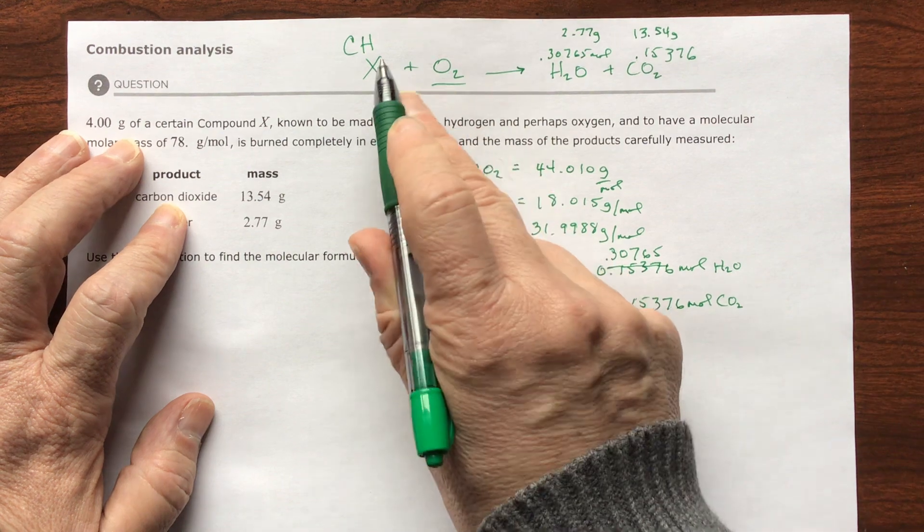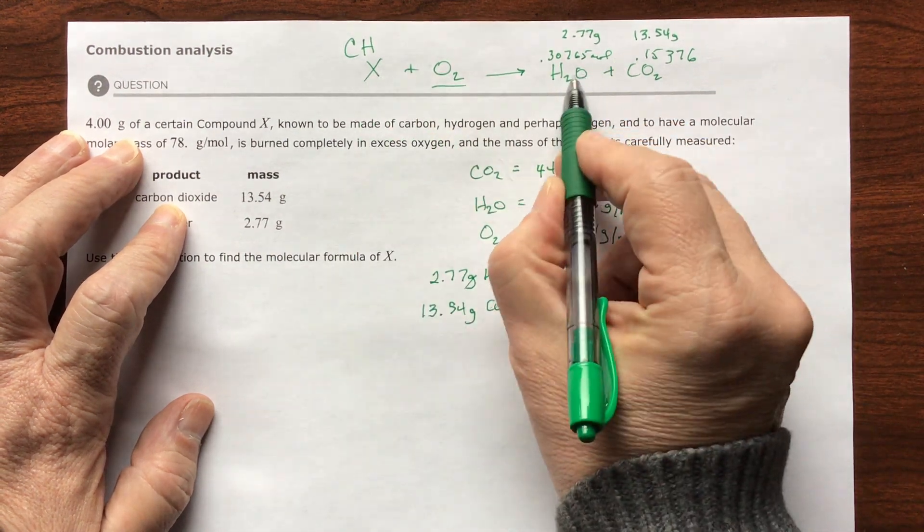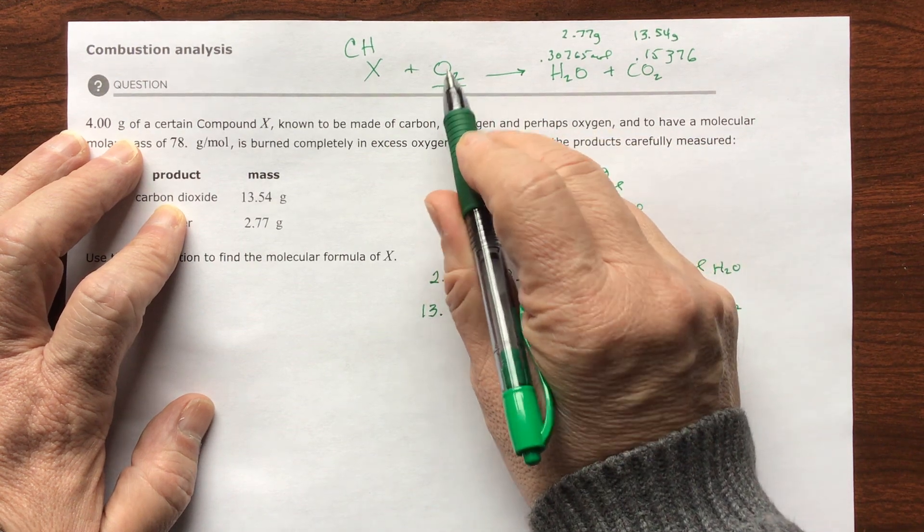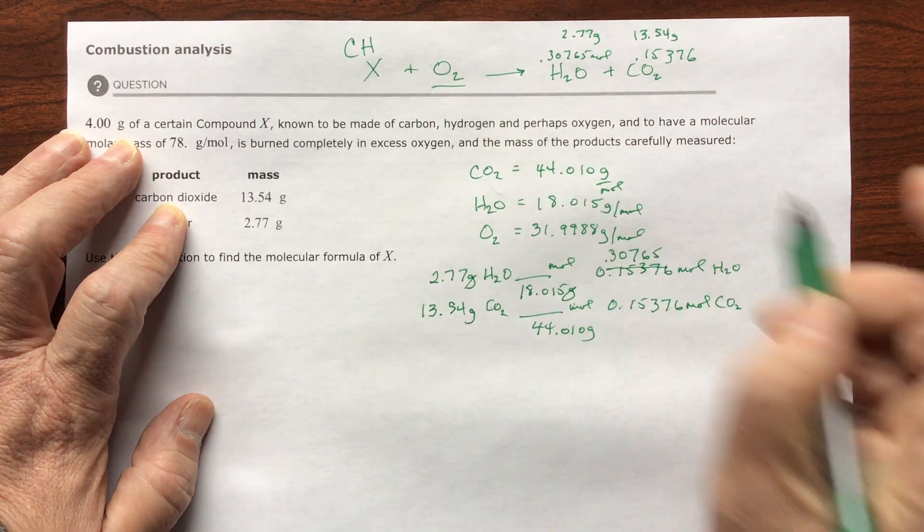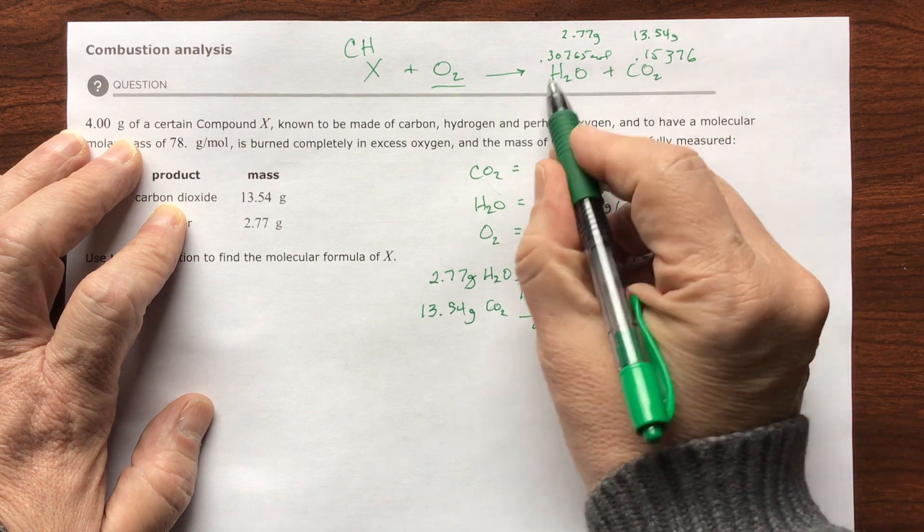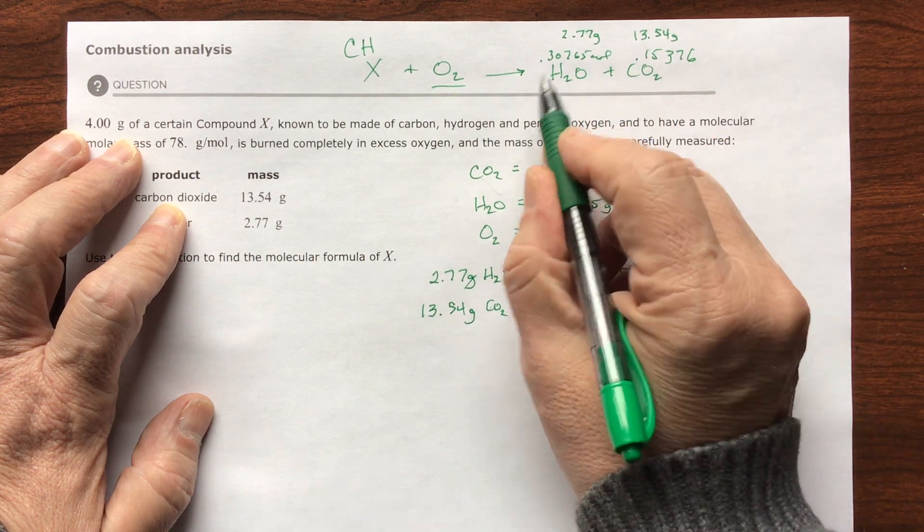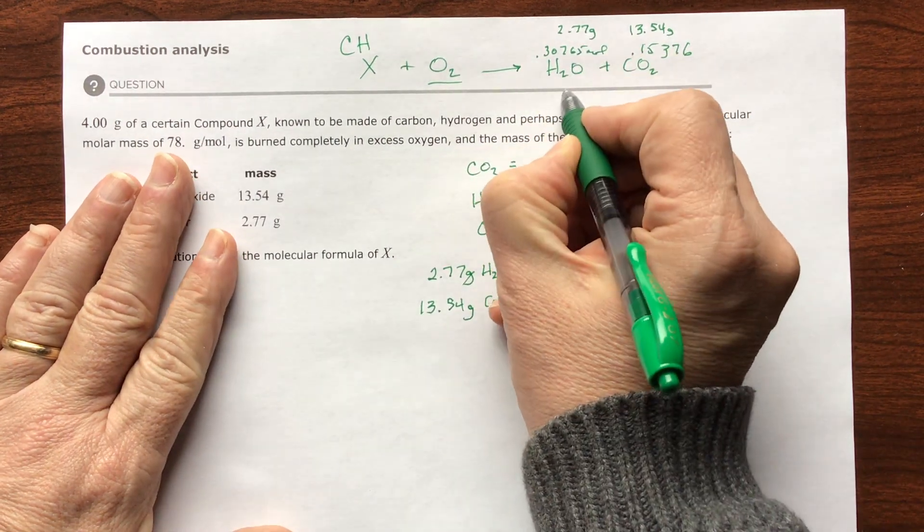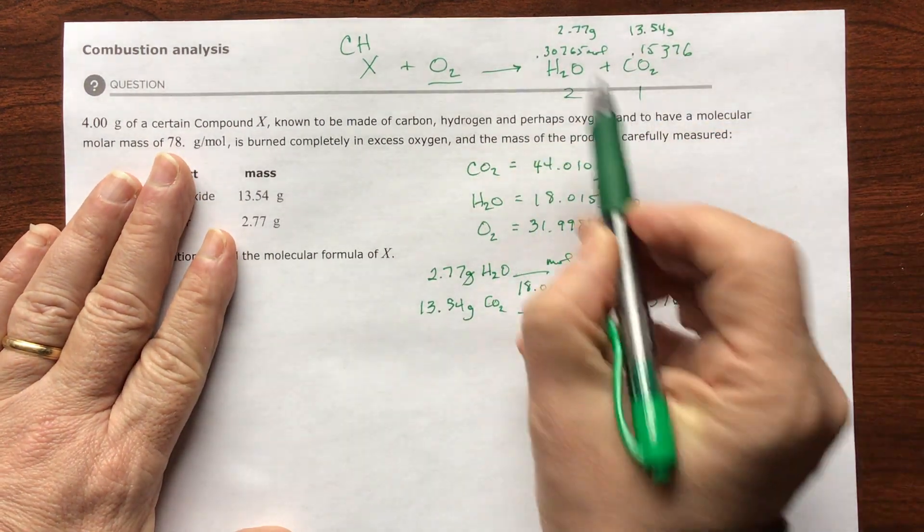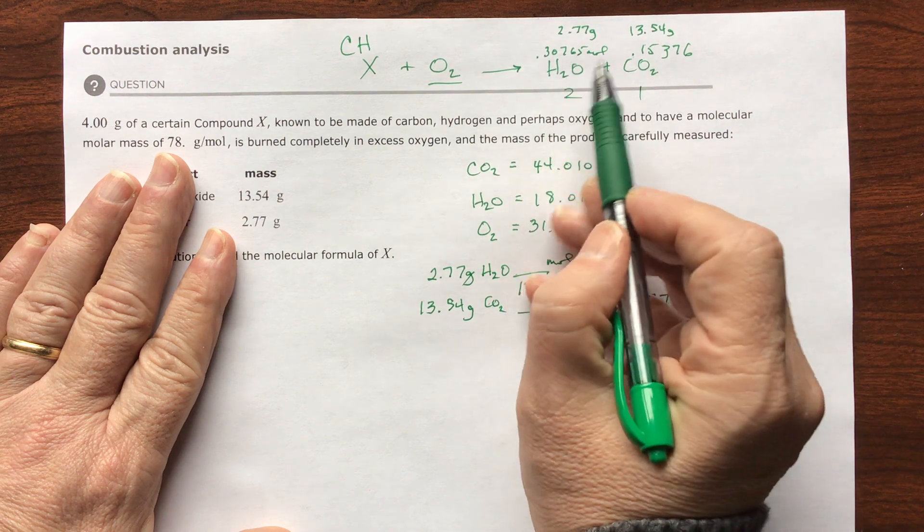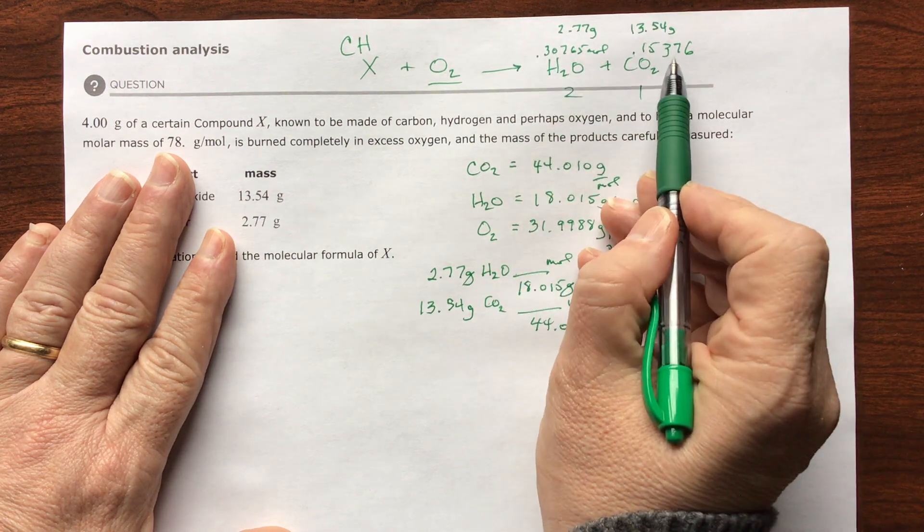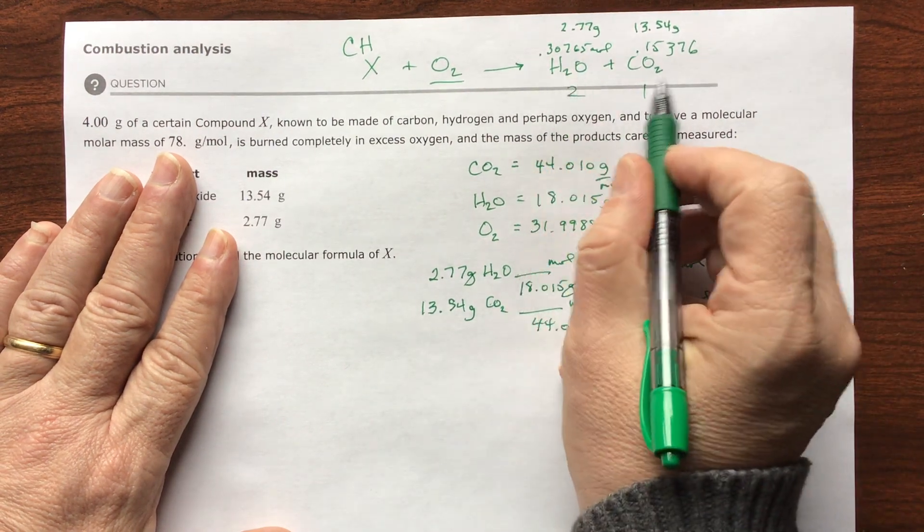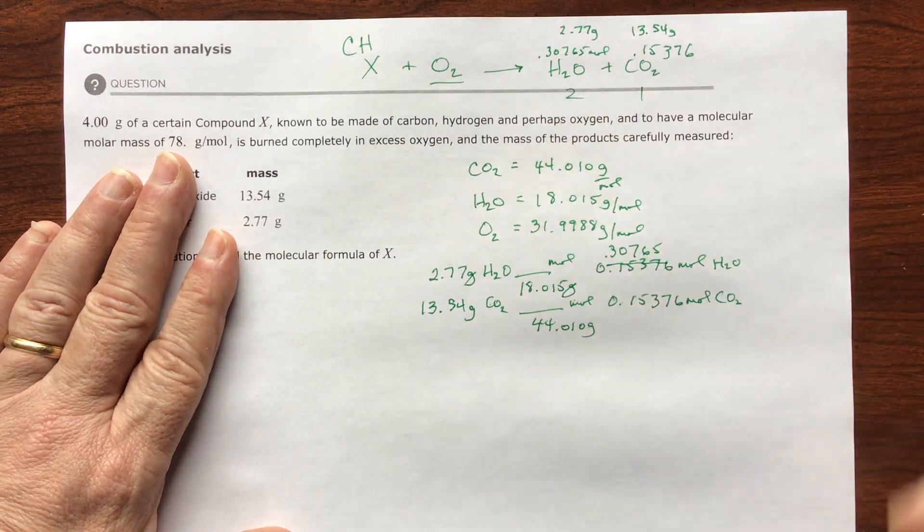If all the oxygen comes from here, I'm assuming this is a hydrocarbon. All my oxygen is from O2, so I'm dealing with carbon and hydrogen. This is a two to one relationship. For every one mole of water, I'm going to have two moles of carbon dioxide.